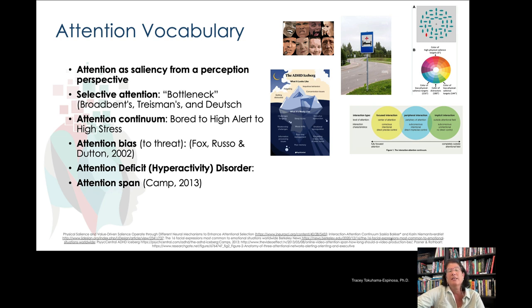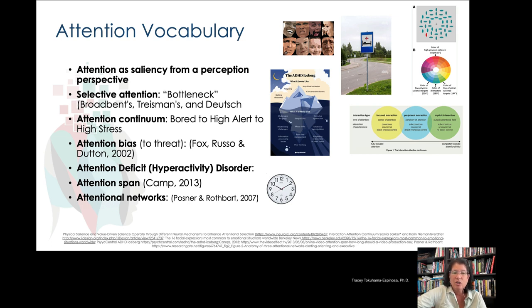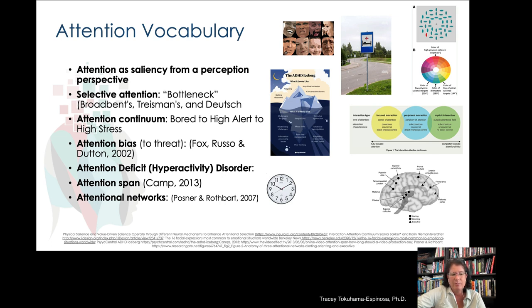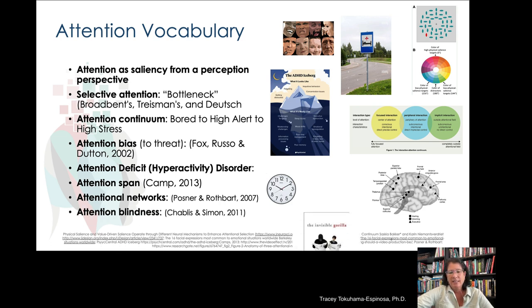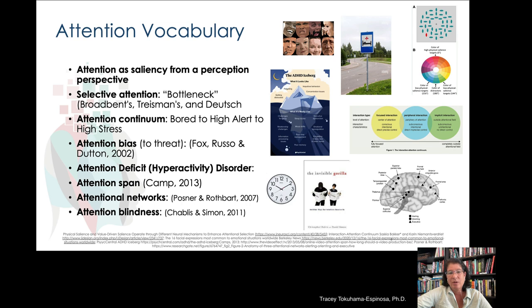Then we look at attention spans and how those go from very short to very long, varying depending on what your brain does — your brain basically adapts to what it does most. Then we'll look at attentional networks, mainly based on Michael Posner's work, who is one of the first and most detailed researchers to define these different attentional networks in the brain. And attention blindness is basically when something's right in front of us and we just don't see it — how different attention systems can tug at your brain so you're not paying attention to something right in front of your face.